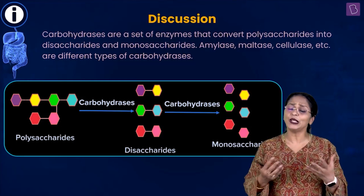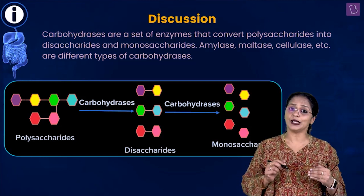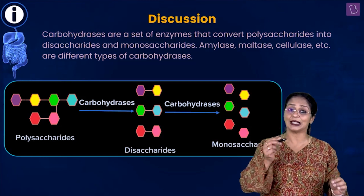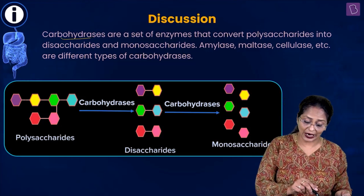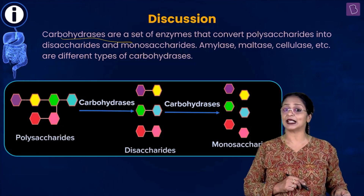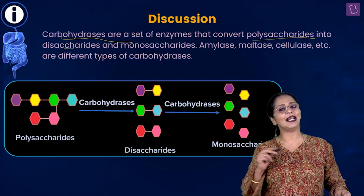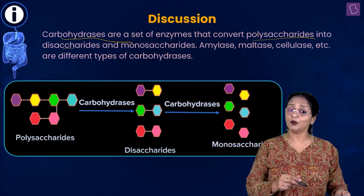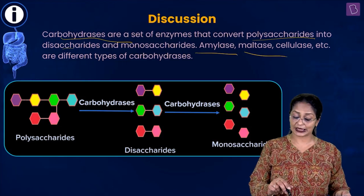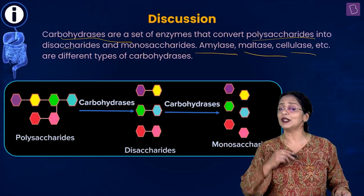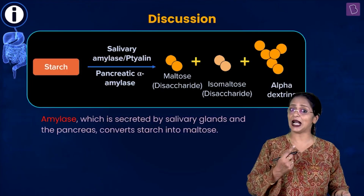Starch is broken down in the mouth itself, so digestion begins in the mouth. Carbohydrases are a set of enzymes that convert polysaccharides into disaccharides and monosaccharides. Some carbohydrases include amylase, maltase, and cellulase — these are all different types of carbohydrases.